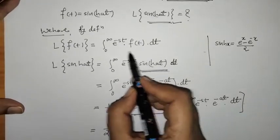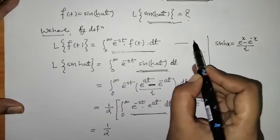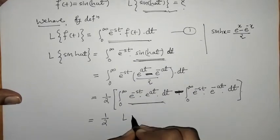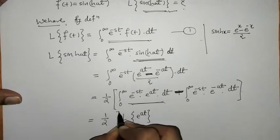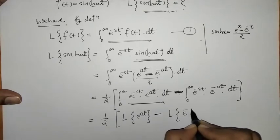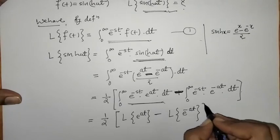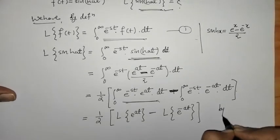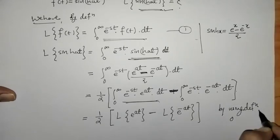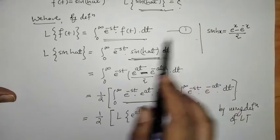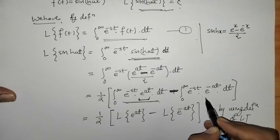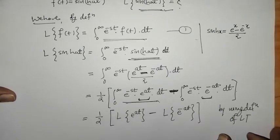We can check that these integrals are similar to the definition of Laplace transform. So we can write f(t) as e raised to at, which is the Laplace of e raised to at, and similarly we have the Laplace of e raised to minus at. We can compare: f(t) equals e raised to at and f(t) equals e raised to minus at.